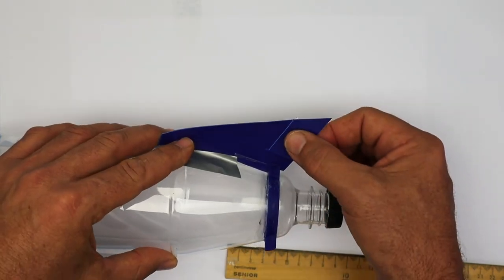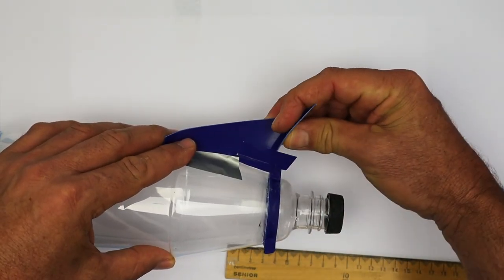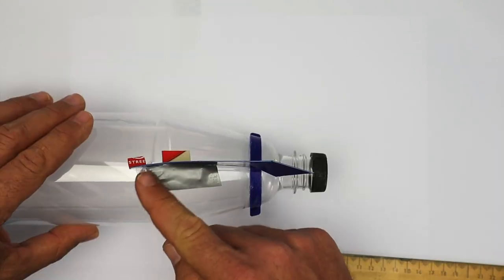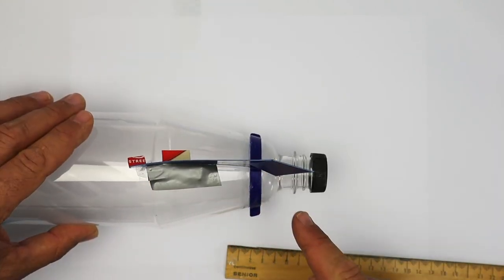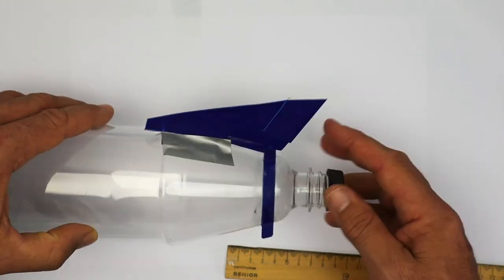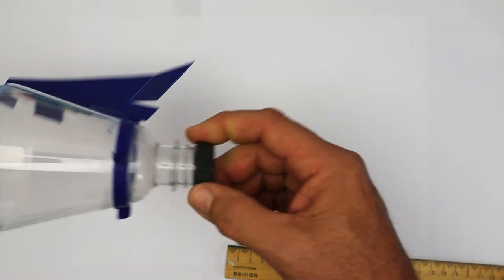Check out this fin. It has an adjustable tab or control surface. As the airflow hits the control surface, it's deflected one way, which rotates the fin away from it, thus giving you rotation.